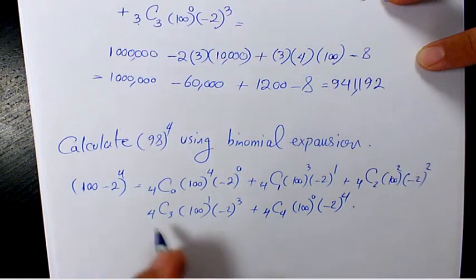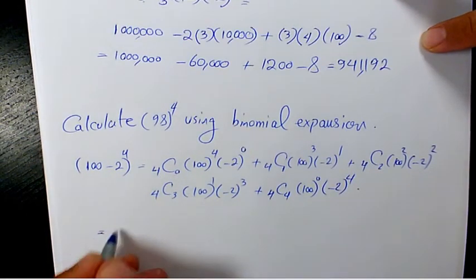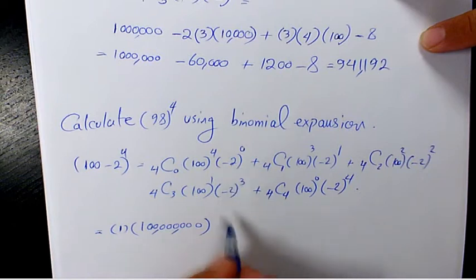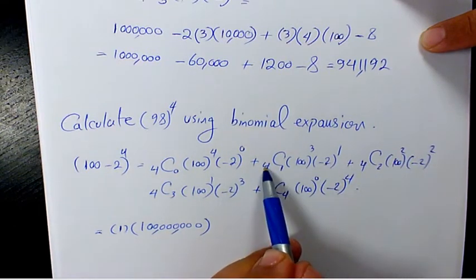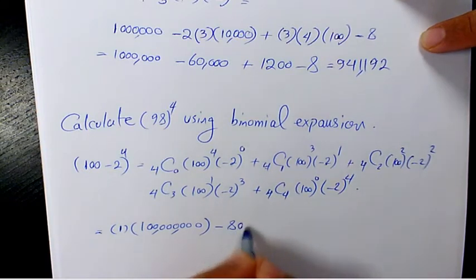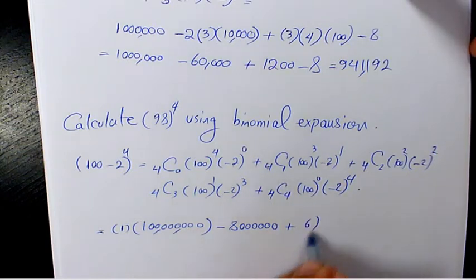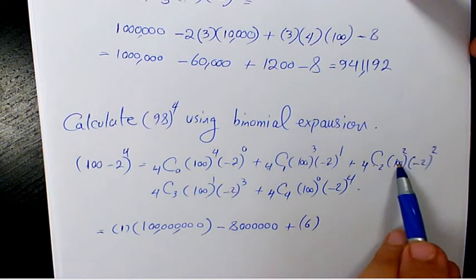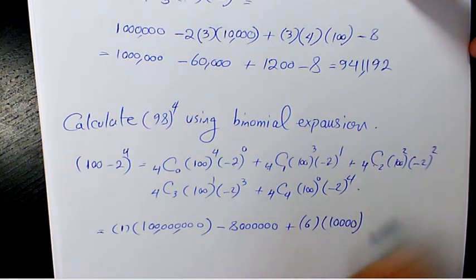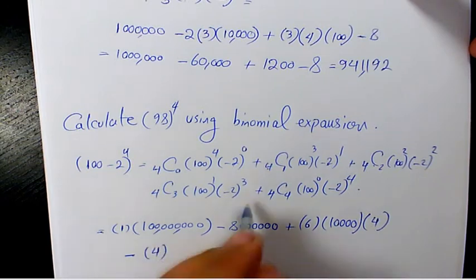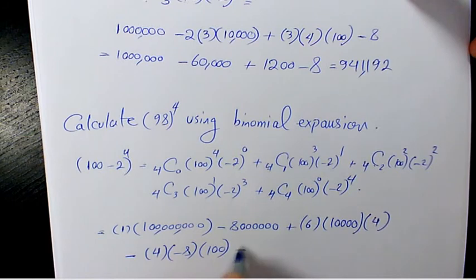Working through the terms: the coefficient 1 times 100 to the power of 4 gives 100,000,000. Then negative 2 times 4 is negative 8, giving minus 8,000,000. Then plus 6 times 100 squared, which is 10,000, times negative 2 squared which is 4. Then minus 4 times negative 2 to the power of 3 which is negative 8 times 100. Plus 1 times 1 times negative 2 to the power of 4 which is 16.